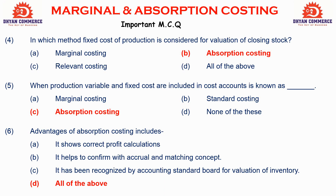MCQ 6: Advantages of Absorption Costing include — A: correct profit calculation, B: conforms with accrual and matching concepts, C: recognized by accounting standard board for inventory valuation, D: All of the above. Answer: D — All of the above. These MCQs cover the key concepts of marginal and absorption costing. Next lecture will continue further. All the best!